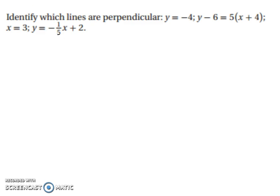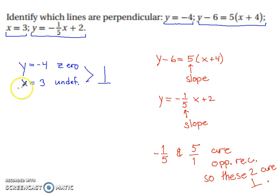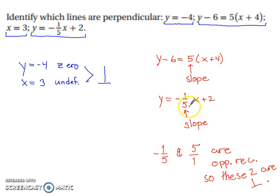Pause the video and try the next one on your own. For the blue lines: y = −4 has a slope of 0 and x = 3 has an undefined slope, so they are perpendicular. The other two equations are y − 6 = 5(x + 4) and y = −(1/5)x + 2. Since −1/5 and 5 are opposite reciprocals, these two are perpendicular as well.